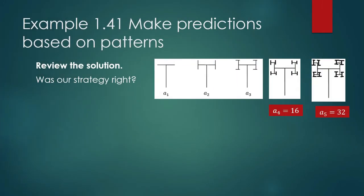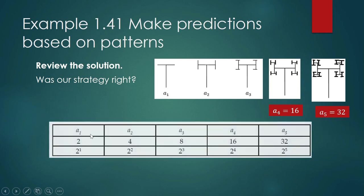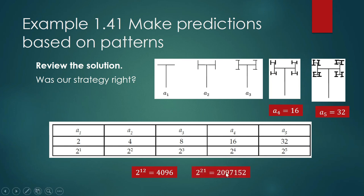The next step in Polya's four-step strategy is to look back and review your solution. Did we understand the problem? Yes — this is a counting problem where we draw short line segments at the ends of each shortest segment and count them. We discovered the pattern is a geometric sequence: a sub n equals 2 to the n. The 12th term is 4,096 and the 21st term is 2,097,152 — that would be a lot of sticks to count manually!